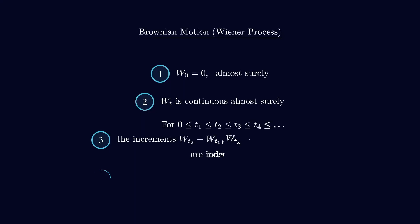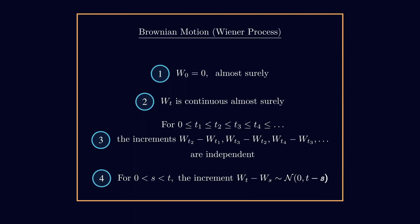Okay, now that we have proved that, we can finally define Brownian motion. First, it starts at zero, almost surely. And by almost surely, I mean that in probabilistic terms, it's as good as certain, the probability of starting at zero is 1. So almost surely is very common in probability. Secondly, Brownian motion is continuous, almost surely, so it doesn't have any jumps or gaps.